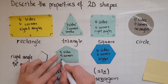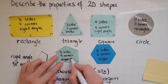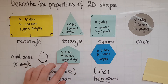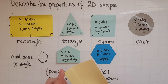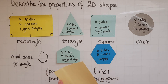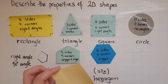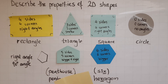Knowing what the right angle looks like helps you identify what type of angles these shapes have — are they smaller, bigger, or equal to a right angle? The right angle is an angle that looks like the corners on a piece of paper, or like the corners in a room. So we've looked at the properties of 2D shapes.